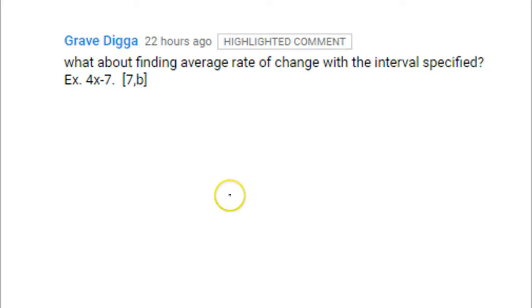Gravedigger asks, what about finding average rate of change with the interval specified? For example, given the function 4x minus 7, and the interval is 7 to b.